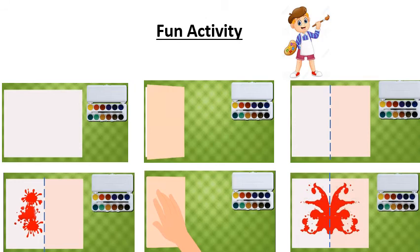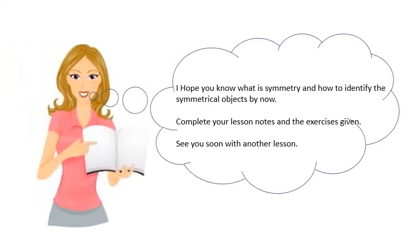Also, draw a line of symmetry after it gets dry. Don't forget to paste it in your notebook after it gets dry. Hope we can see a nice symmetrical painting this time. I hope you know what is symmetry and how to identify symmetrical objects by now. Complete your lesson notes and exercises given. See you soon with another lesson. Thank you. Goodbye.